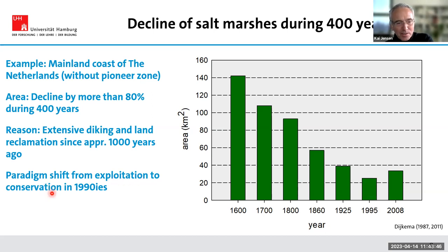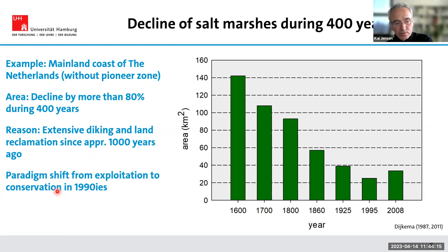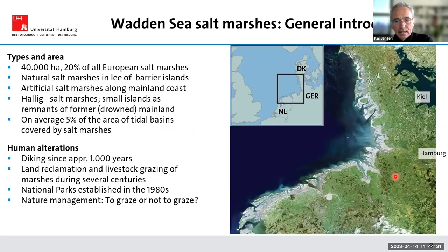About 30 years ago, there was a paradigm shift from exploitation to conservation. At the end of the last century, people recognized that something needed to change about the management of this landscape. They stopped diking activities, stopped land reclamation, and introduced nature conservation policies in the area. During the last 10 to 20 years, we have seen a stabilization or even an increase in the area of salt marshes in the Wadden Sea.